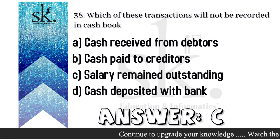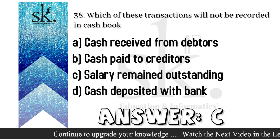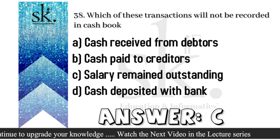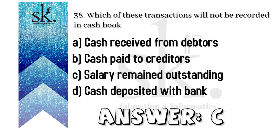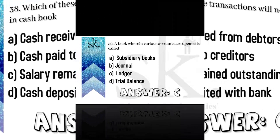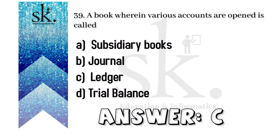The next question: which of the following transactions will not be recorded in the cash book? Cash received from debtors — yes, recorded. Cash paid to creditors — recorded. Salary remaining outstanding — no, outstanding or prepaid entries are not recorded in the cash book. Therefore the answer will be C.